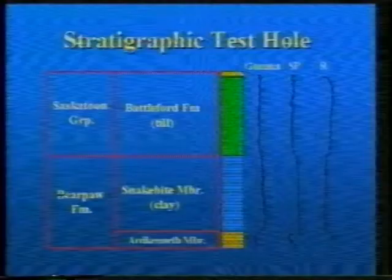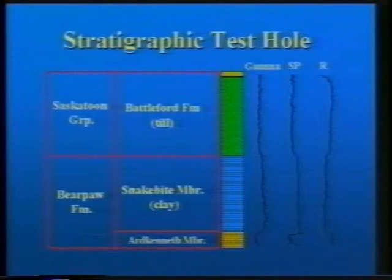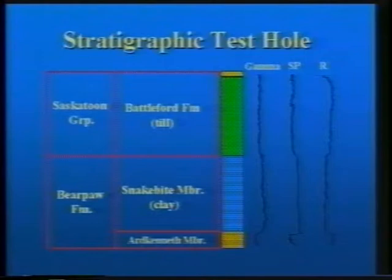On the next overhead, I'll show you the geology at the King site to the base of exploration, which was taken down to the Ardkenneth member. On the previous overhead, I identified the Saskatoon group, the snakebite member, and the Ardkenneth. Let me start at the bottom and work up. The Ardkenneth member is 22 meters thick. It's a medium grain sand, saturated. It's overlain by the snakebite member, which is marine clay. It's 76 meters thick. It's plastic and non-calcareous. That's the bottom aquifer — we'll call that the clay aquitard.